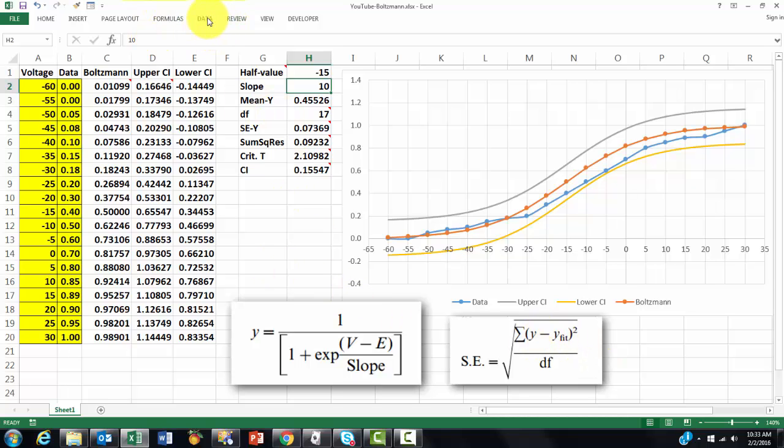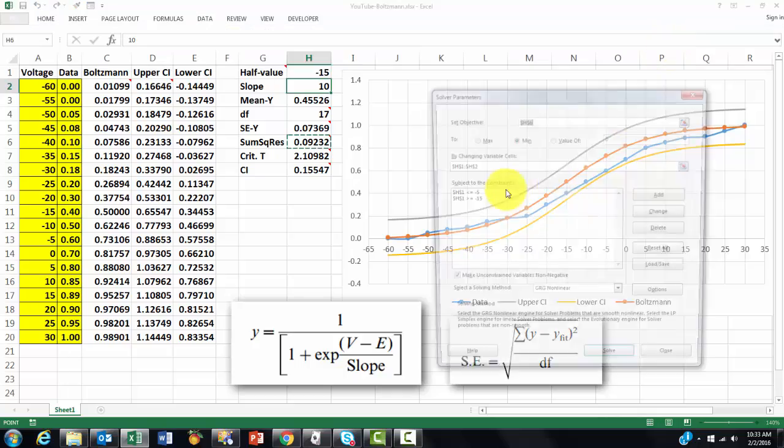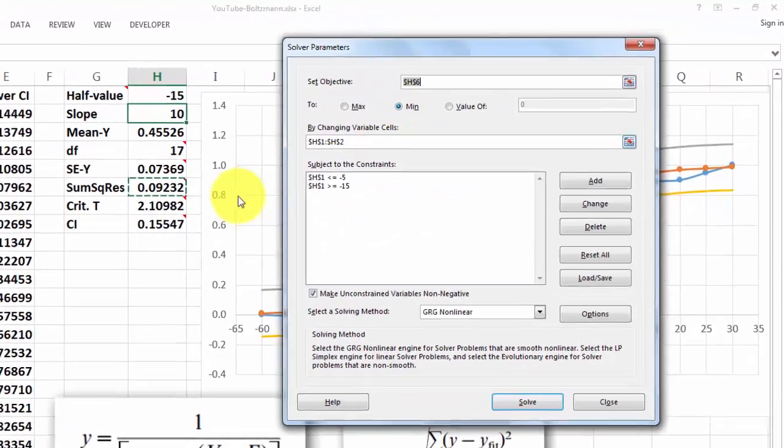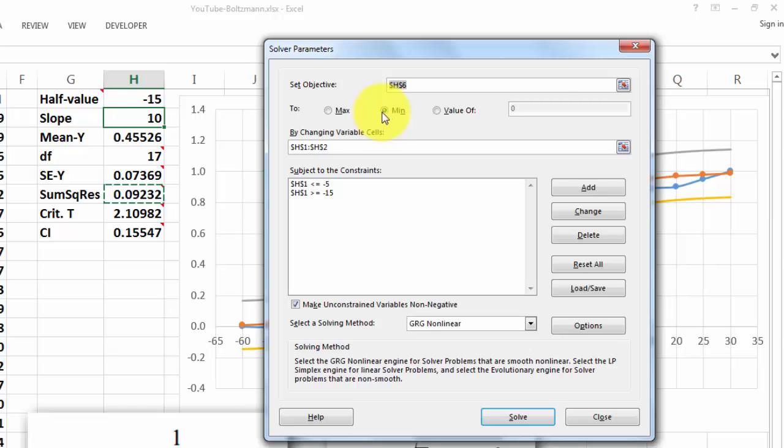Once we have done that, we can do a solver situation. And in solver, we are going to set that sum of squared residuals to a minimum value by changing the half value and the slope. But we put a few constraints in there.